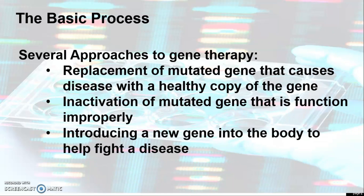There are several approaches to gene therapy, according to Place Floor in 2017. First is the replacement of a mutated gene that causes disease with a healthy copy of the gene. Second is the inactivation of a mutated gene that is functioning improperly. Third is the introduction of a new gene into the body to help fight disease. A gene cannot be directly inserted into a human cell; it is inserted using a carrier or vector. The most common vectors are viruses that have been genetically changed to carry normal human DNA, as viruses have evolved a way of encapsulating and transporting their genes to human cells.